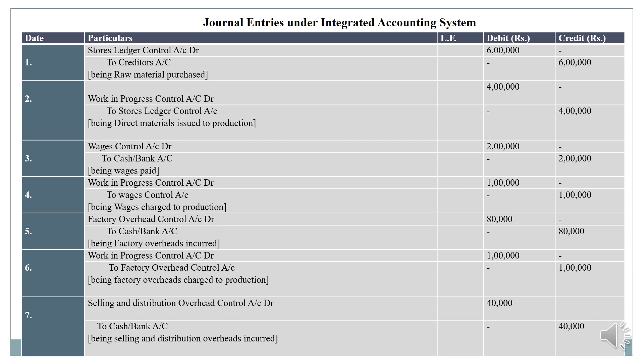Fifth transaction journal entry: factory overhead control account debit to cash or bank account — amount 80,000 rupees. Narration: being factory overheads incurred.